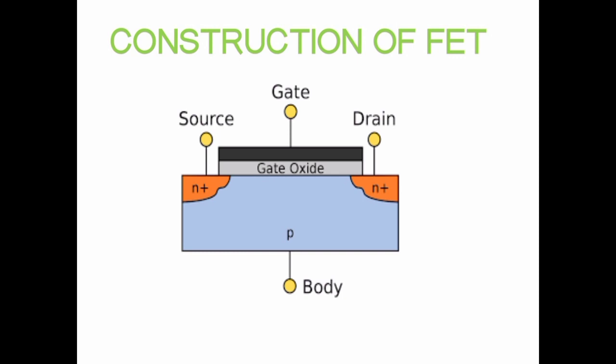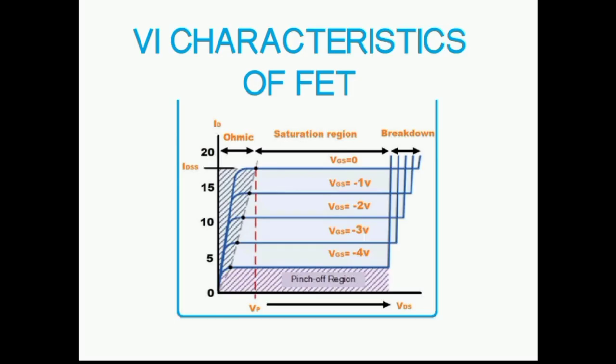By applying a voltage at the gate terminal, the number of charge carriers in the channel can be modulated, leading to a corresponding change in the current flow between the source and the drain terminals.